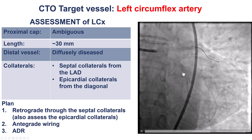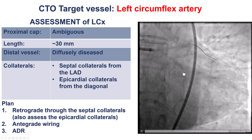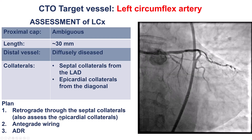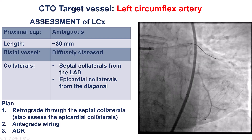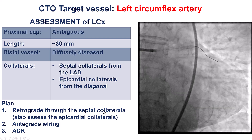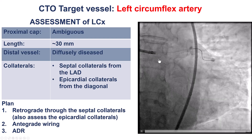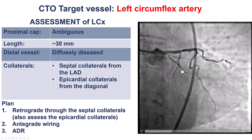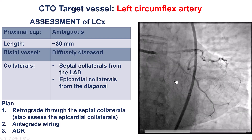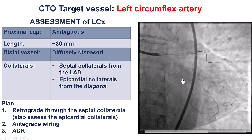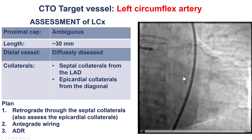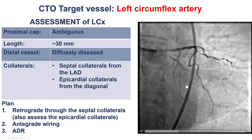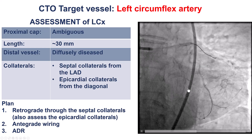Given the proximal cap ambiguity, we decided to start with a primary retrograde approach through the septal collaterals, followed by antegrade wiring if we were able to clarify the ambiguity, and leaving ADR as a final option because there was a bifurcation at the distal cap.